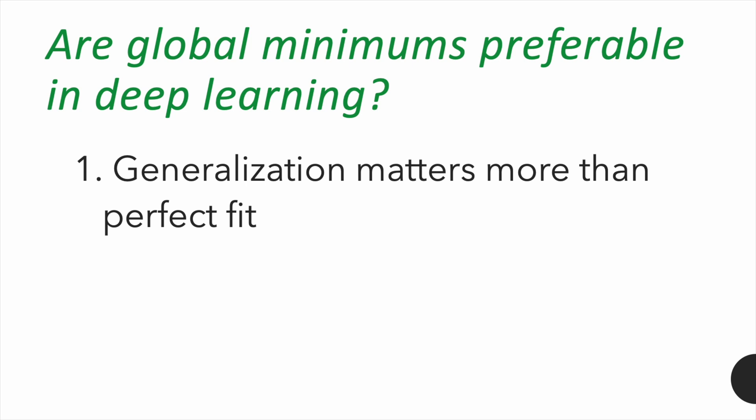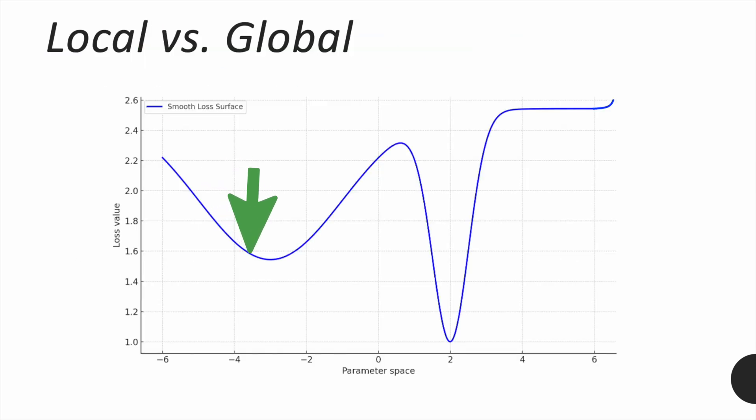That's why, in practice, a good local minimum, one that gives us low loss but also generalizes well, is usually preferred. In fact, research has shown that flatter local minima, those with gentle curvature, tend to generalize better than sharp or deep minima, even if they're not the absolute lowest point.